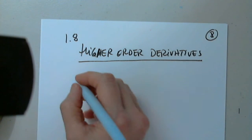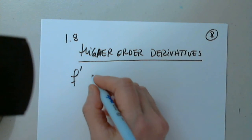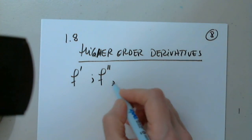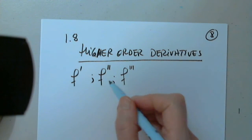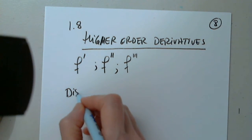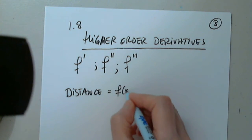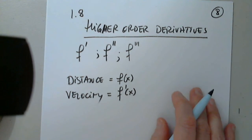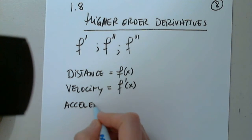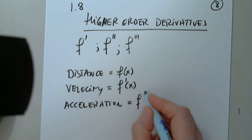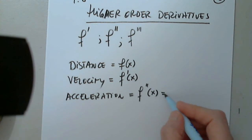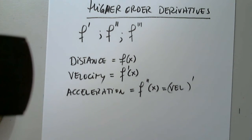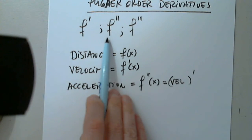Why do we need this? Is the first derivative not good enough? You'll see why in the next few chapters. I can have the second derivative, which is the derivative of the first. I can have the third derivative, which is the derivative of the second. For example, if I have the distance function f of x, and I want to find the velocity function, I find f prime. If I want to find the acceleration, I find the second derivative of the distance, or the first derivative of the velocity.